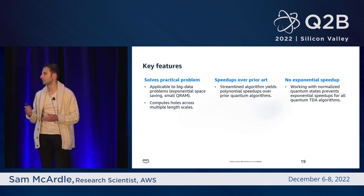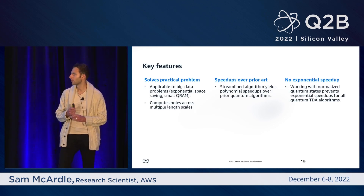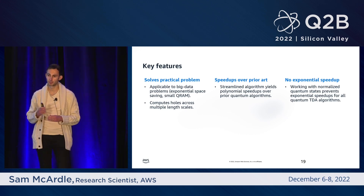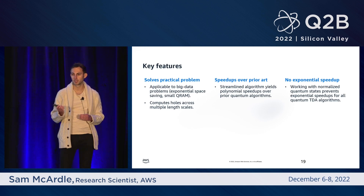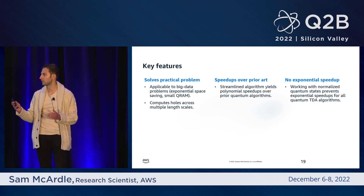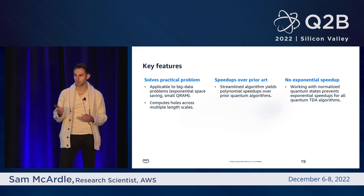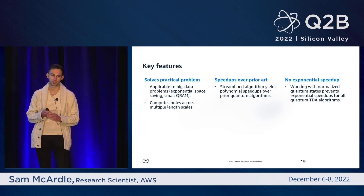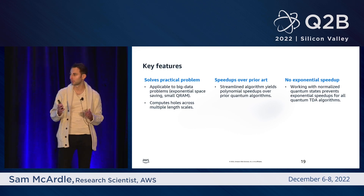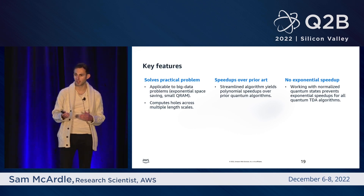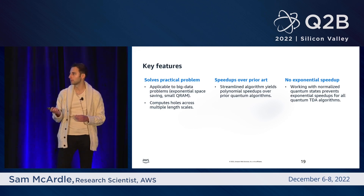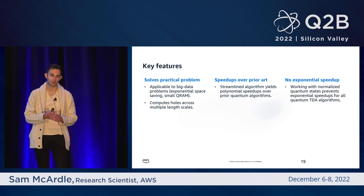Our algorithm has a few key features. It solves the practical problem and is the first quantum algorithm in topological data analysis that's really applicable in the big data regime because of the exponential space saving of our new encoding. Not only do we use this encoding for our data qubits, but you can also get away with using a very small quantum memory or QRAM, so you don't have the data input problem that some other quantum machine learning algorithms have. We're also the second quantum algorithm to compute holes across multiple length scales, which is the important problem to solve because of the effects of noise and not knowing what length scale to set. Because of our streamlining of the algorithm, we obtained significant polynomial speedups over the previous algorithm that was also able to solve this task.